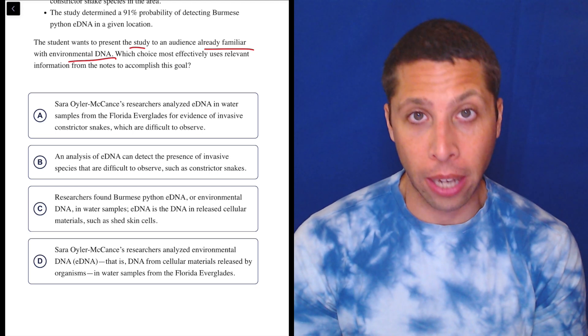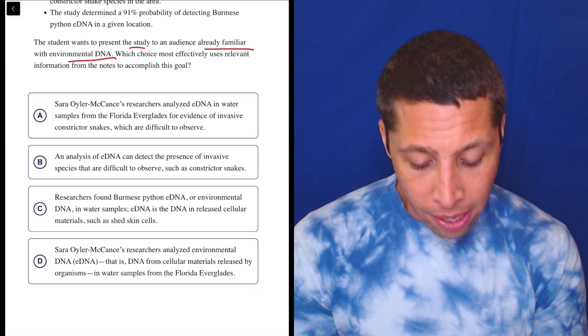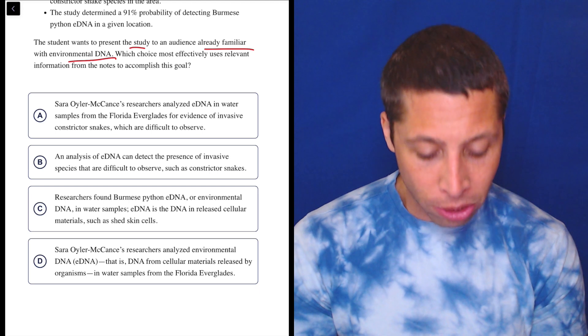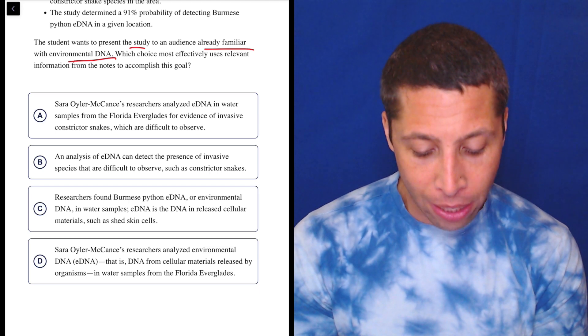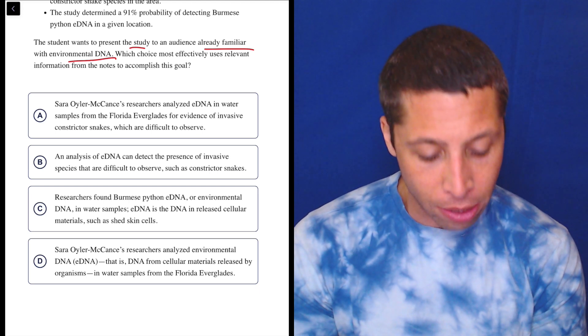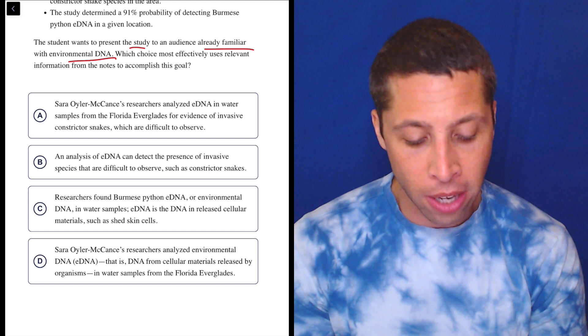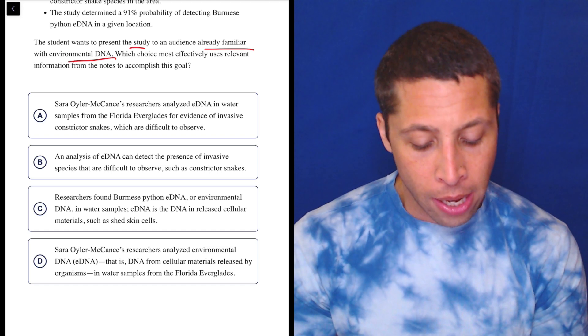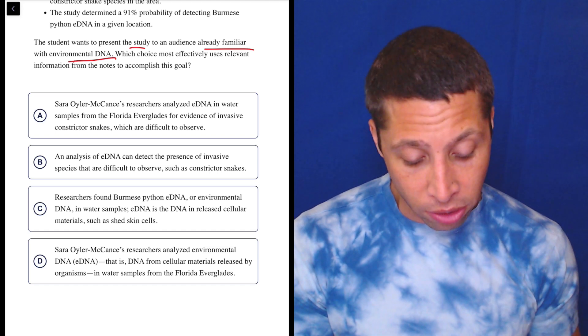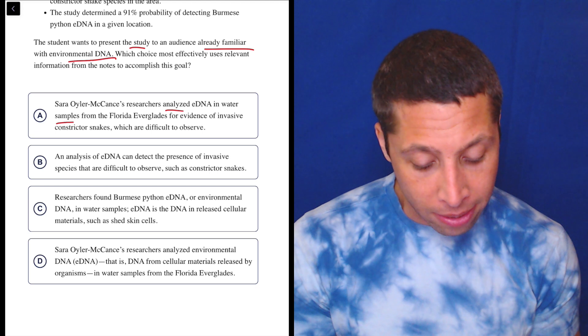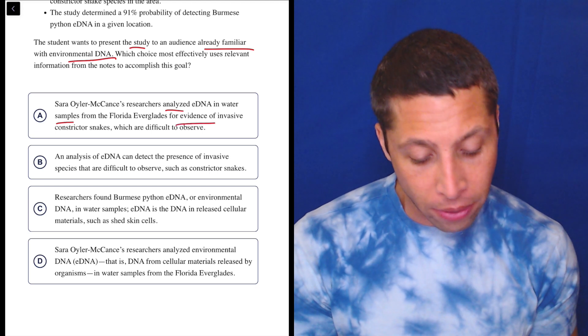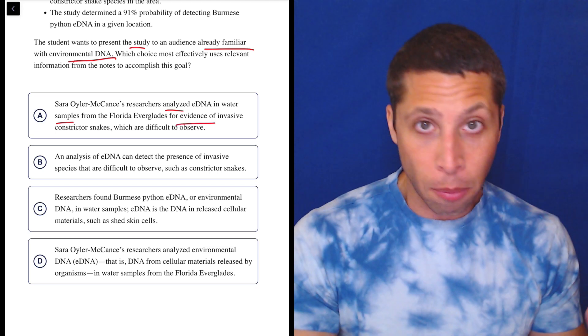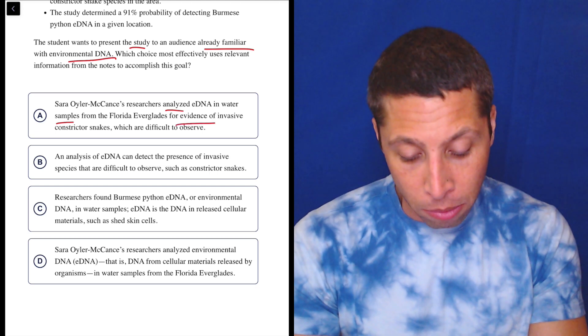So let's look at the choices and I think it'll become clear as we go. Choice A: Sarah Euler-McCance's researchers analyzed eDNA in water samples from the Florida Everglades for evidence of invasive constrictor snakes which are difficult to observe. So they're definitely presenting the study. They're saying what they did - they analyzed these samples for evidence of these snakes. So one goal seems checked off.